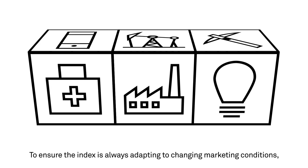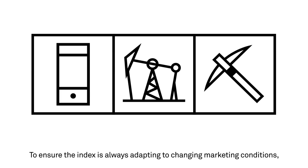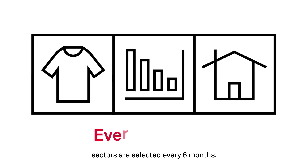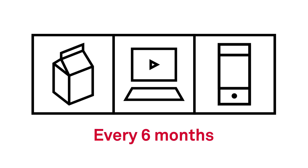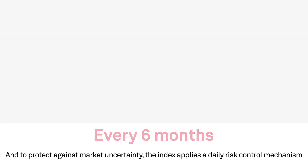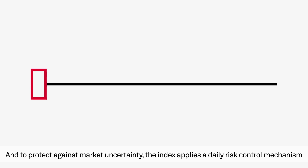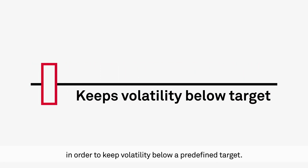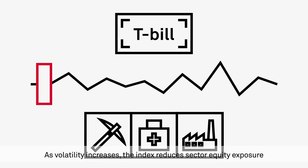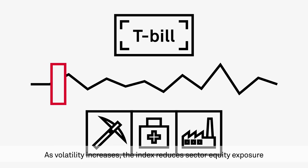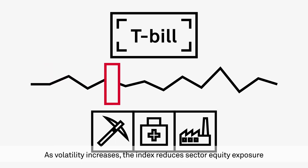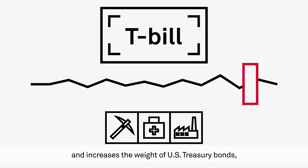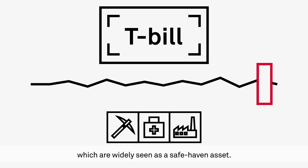The index equally weights these three sectors in order to provide diversification. To ensure the index is always adapting to changing market conditions, sectors are selected every six months. And to protect against market uncertainty, the index applies a daily risk control mechanism in order to keep volatility below a predefined target. As volatility increases, the index reduces sector equity exposure and increases the weight of U.S. Treasury bonds, which are widely seen as a safe haven asset.